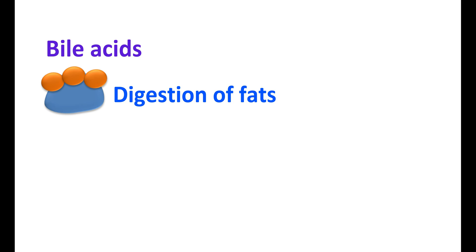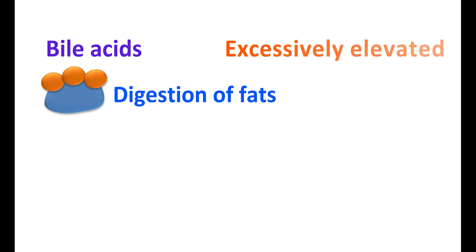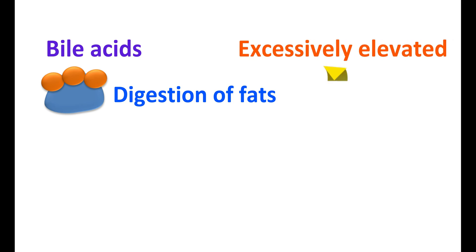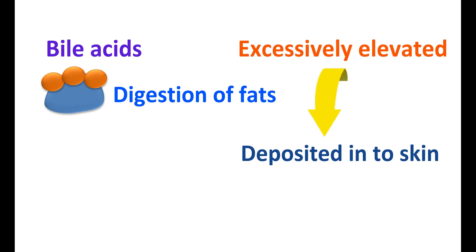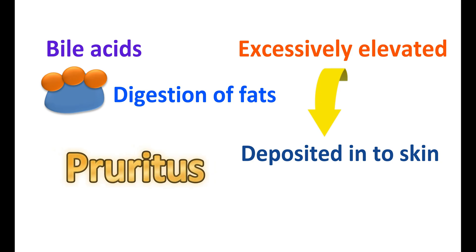Normally bile acids are responsible for digestion of fats; however, when they are excessively elevated they may be deposited into skin cells, leading to pruritus — severe itching. Since cholestyramine can increase the excretion of bile acids, it can be used to treat pruritus by reducing itching. These are the two important indications of cholestyramine.